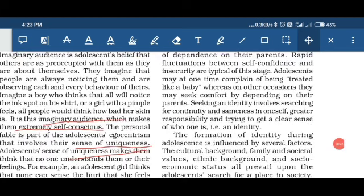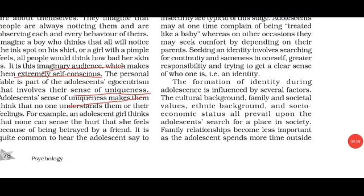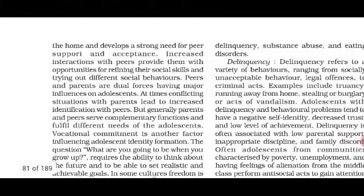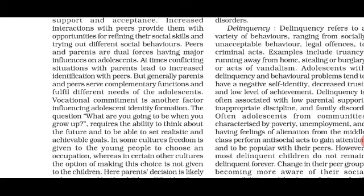Emotions fluctuate during this process, and adolescence is influenced by several factors including family background, cultural background, the type of society, and the values given to the child by society and family. During adolescence, family relationships become less important as the child spends more time with peer groups, which helps develop new social skills. Sometimes there is conflict between parental and peer influences, but generally parents and peers serve complementary functions.